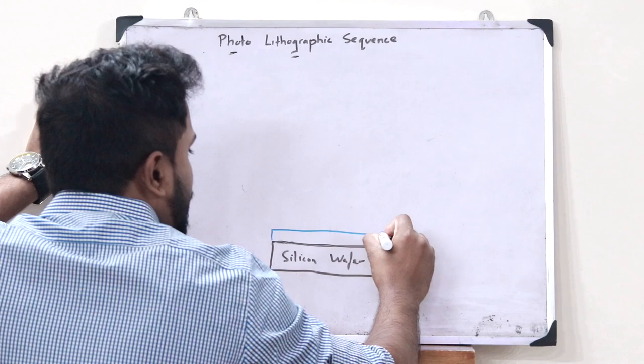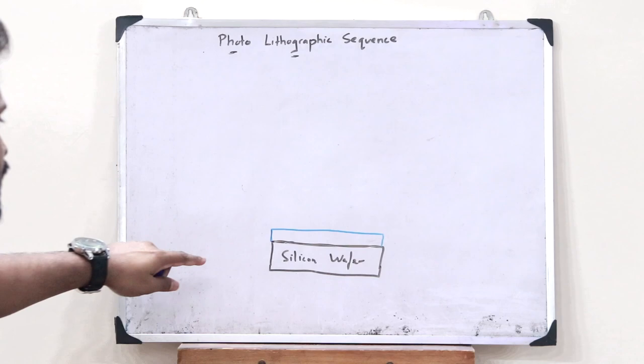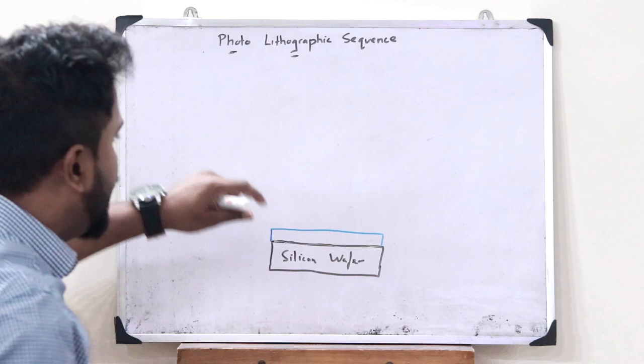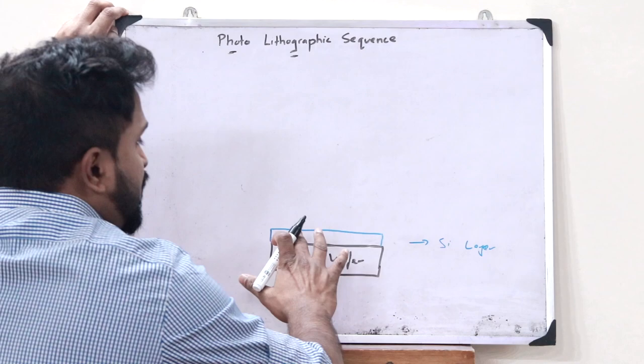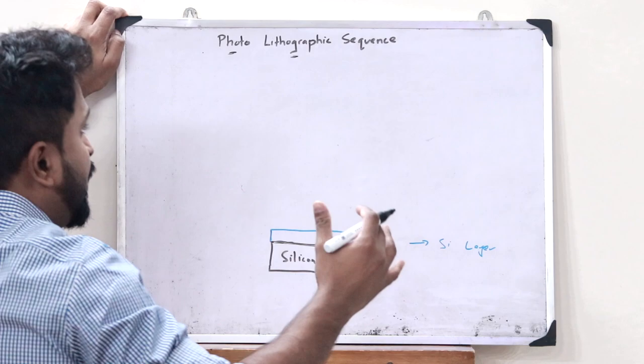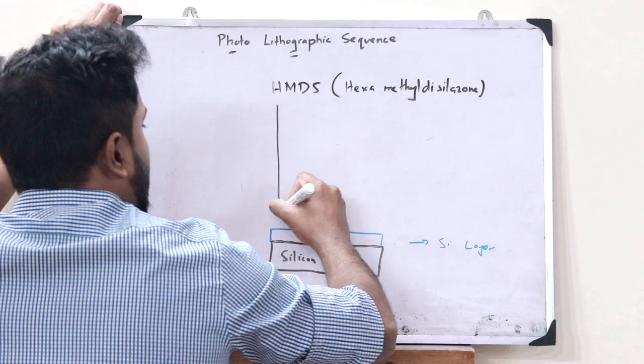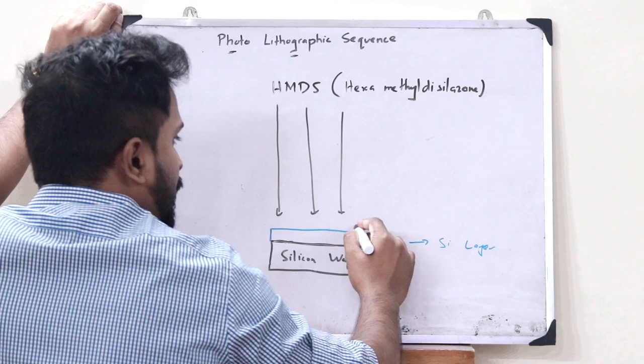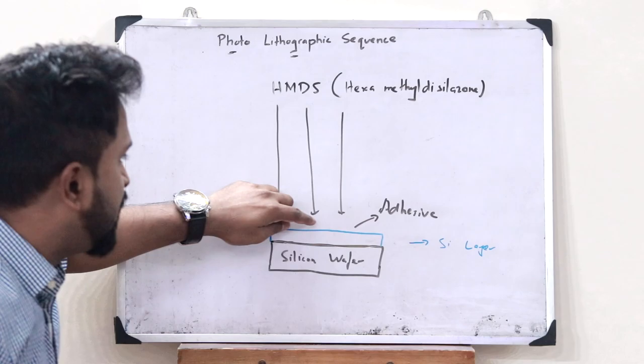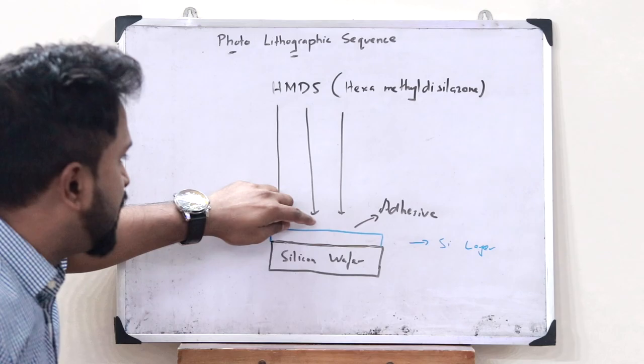Once we obtain a clean surface, we now place a layer of silicon on top of this particular silicon wafer. Next, we have to make this particular surface adhesive. For us to make this silicon layer adhesive, we treat it with something referred to as HMDS — hexamethyl disilazine — which is placed on top of this silicon layer to make it adhesive.